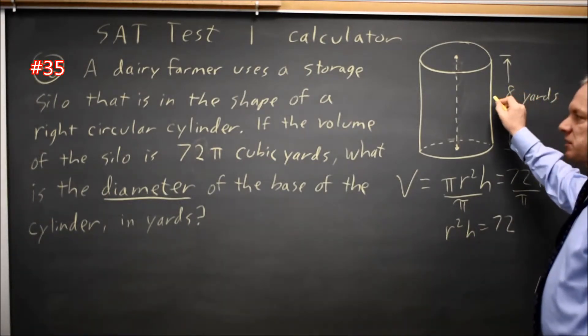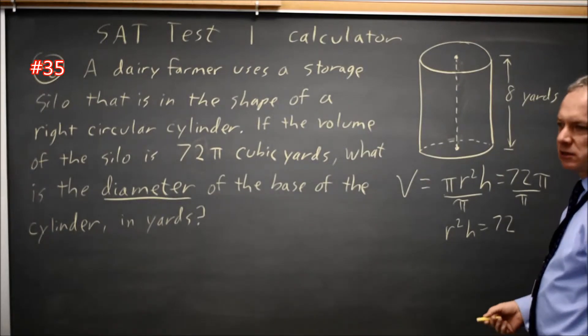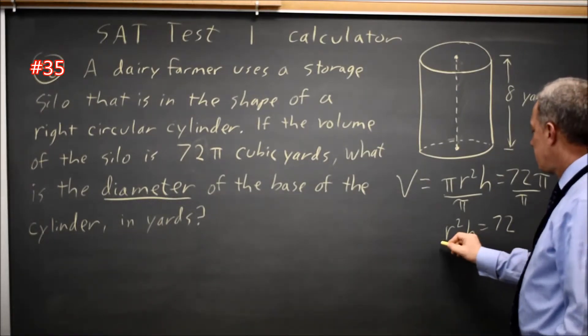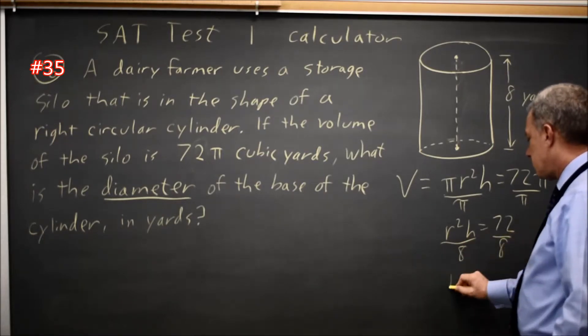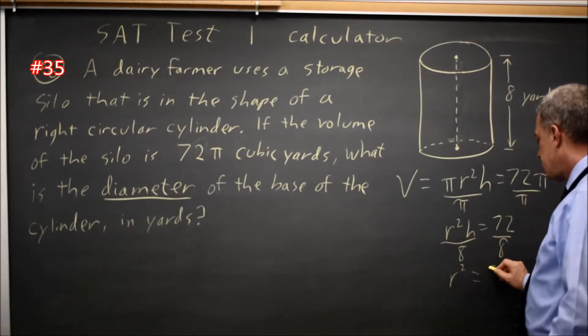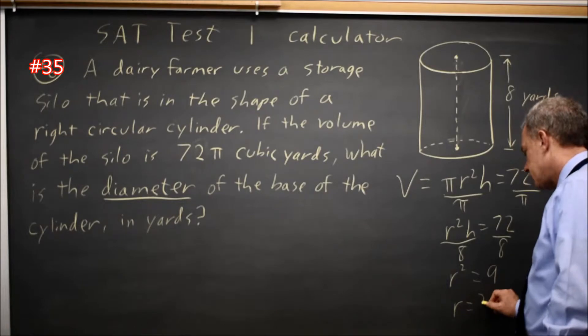We're told that the height of the cylinder is 8. So dividing by the height of 8, you get r squared equals 72 over 8 is 9. So r equals 3.